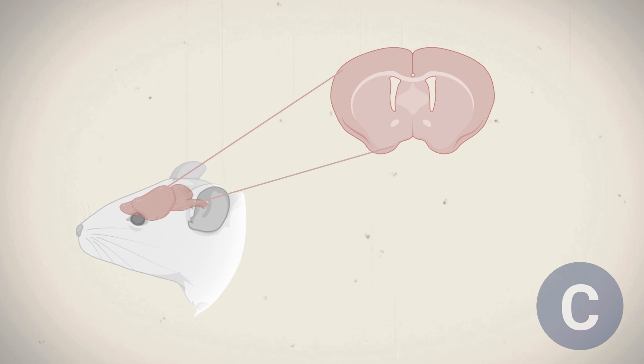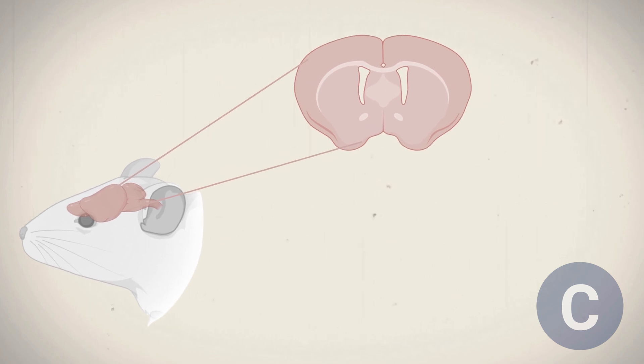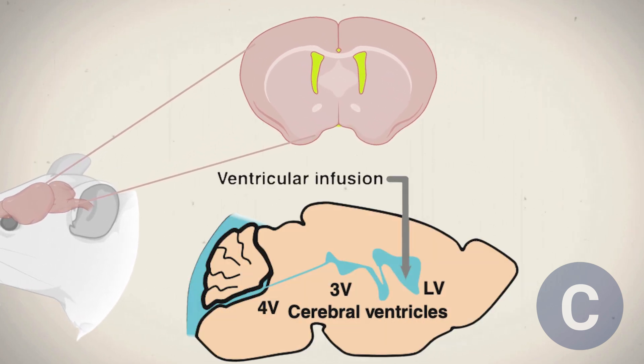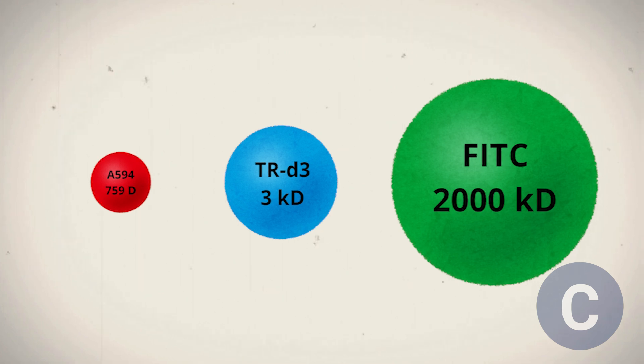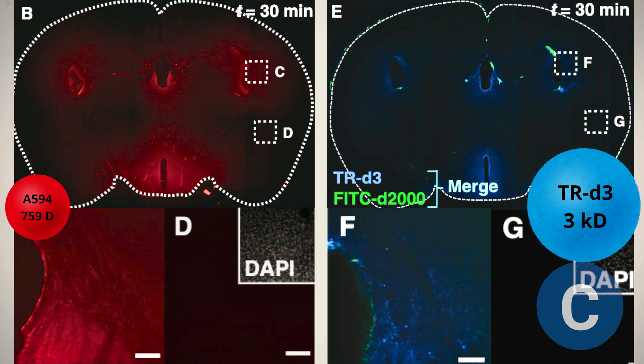The researchers used a technique called fluorescent tracer infusion, directly injecting tracers into the brain ventricles of anesthetized mice. They chose three tracers of different molecular sizes. These different sizes were selected because molecule size can affect how deeply they penetrate tissue. The images obtained show that the small and medium-sized tracers can partially diffuse from the ventricles into the brain parenchyma, but do not penetrate deeply.